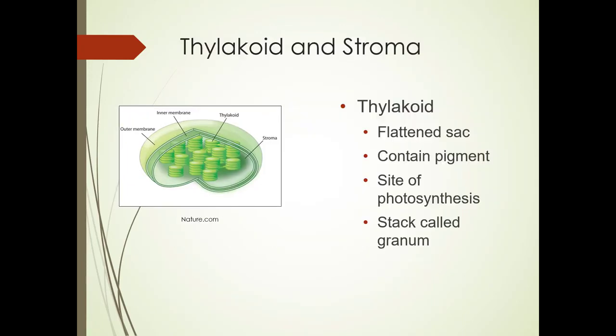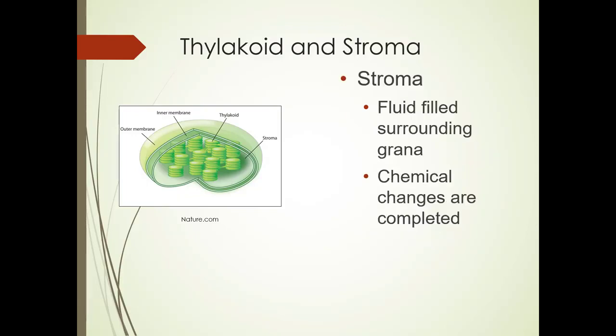Chloroplasts are made up of thylakoids and stroma. The thylakoid is a flattened sac that contains the pigment. It's a site of photosynthesis, and a stack is called a granum. The stroma is the fluid surrounding the grana, and this is where chemical changes are completed. As I mentioned, we're going to get much more into photosynthesis, and you'll see where this comes into play.